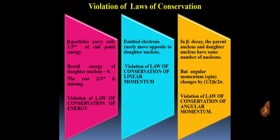And in beta decay, the parent nucleus and daughter nucleus have same number of nucleons, but angular momentum changes by half h divided by 2π. This is violation of law of conservation of angular momentum.